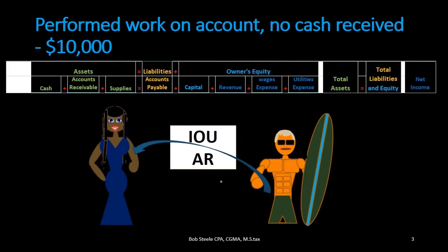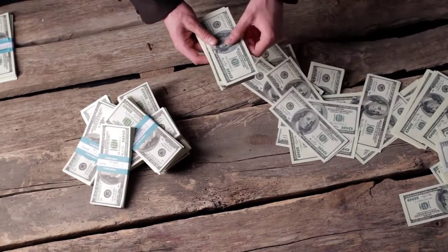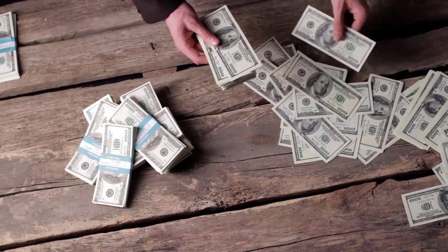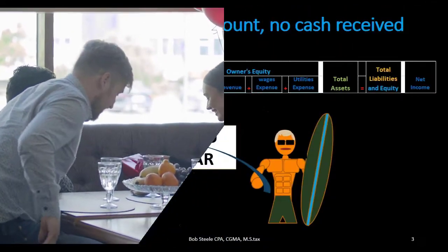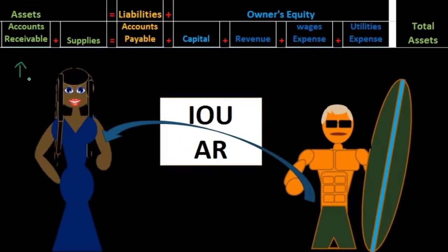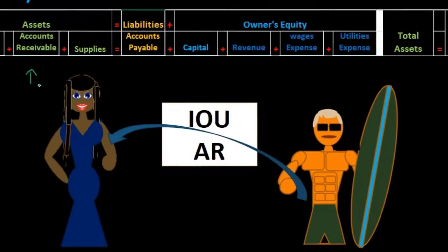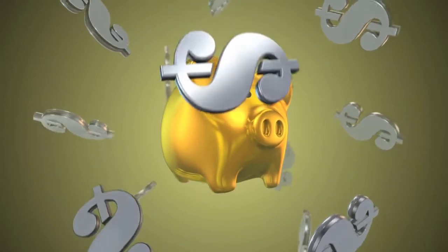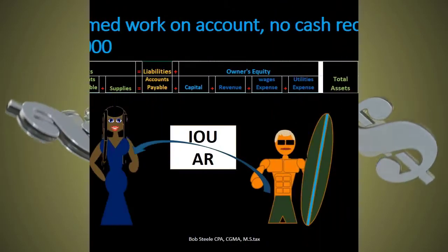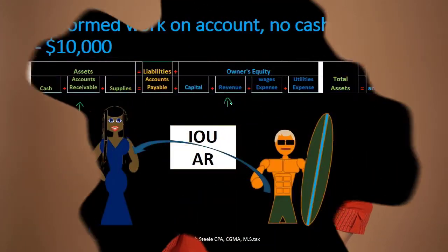The services have been completed, so we haven't received cash but we have an IOU — that's the accounts receivable item. The receivable is going up because we are owed money. The other side of the transaction: why will people pay us this $10,000 in the future? Because we have earned it. Under the revenue recognition principle, we recognize revenue at the point it is earned. Revenue is on the equity side, so if receivable went up, revenue must also go up.